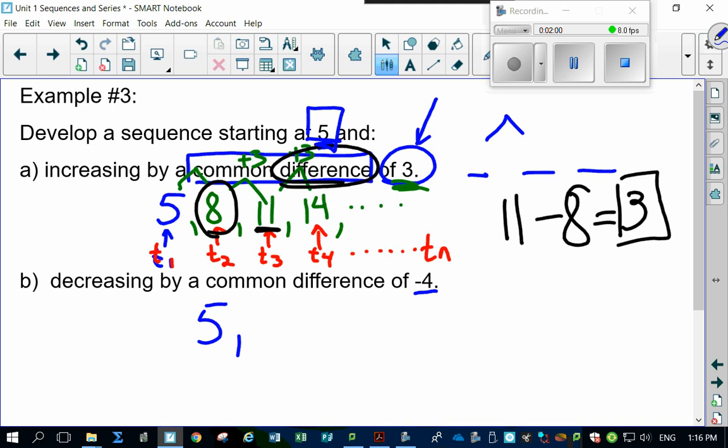Now, the common difference is negative 4. So you add negative 4 to this, you end up with 1. Add negative 4 again, you end up with negative 3. Add negative 4 again, you end up with negative 7.